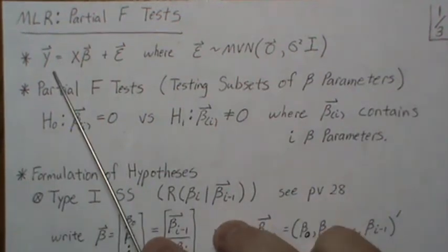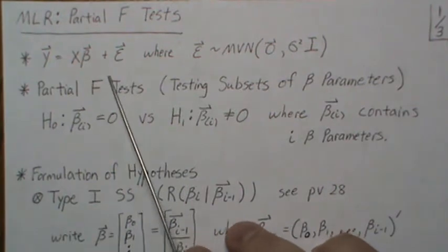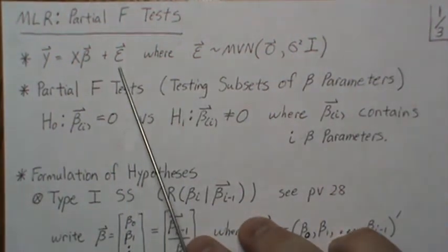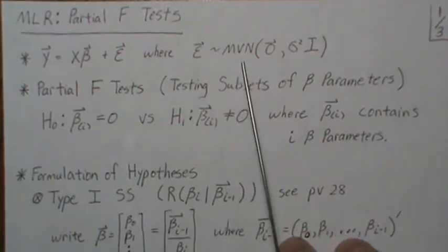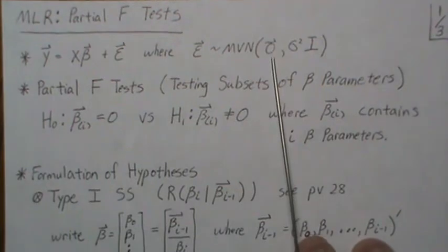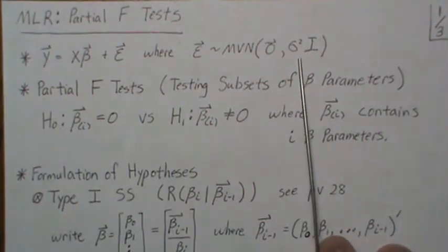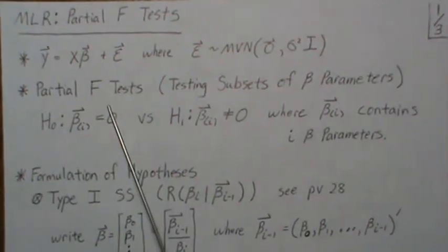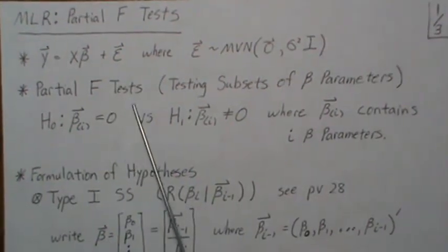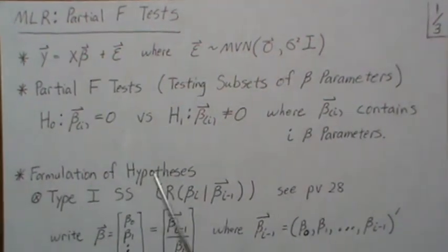Here's the model for multiple linear regression: y is equal to X beta plus epsilon, where epsilon is multivariate normal with mean vector 0 and variance-covariance matrix sigma squared I. Generically, the partial F-test is testing subsets of beta parameters equal to zero.